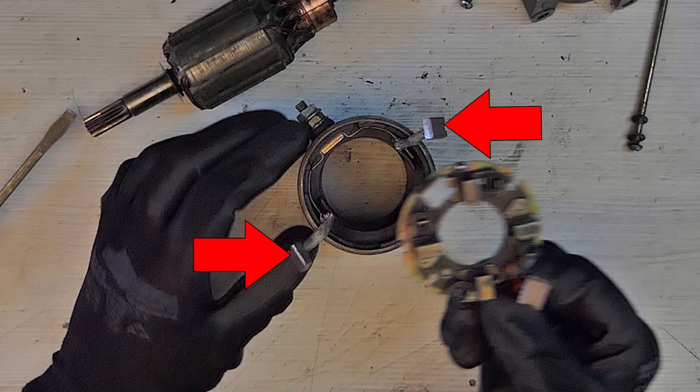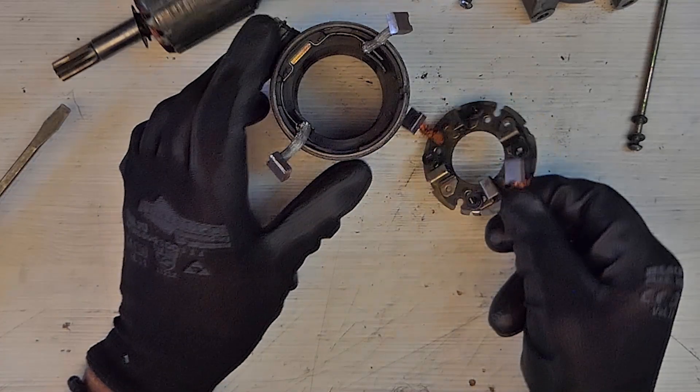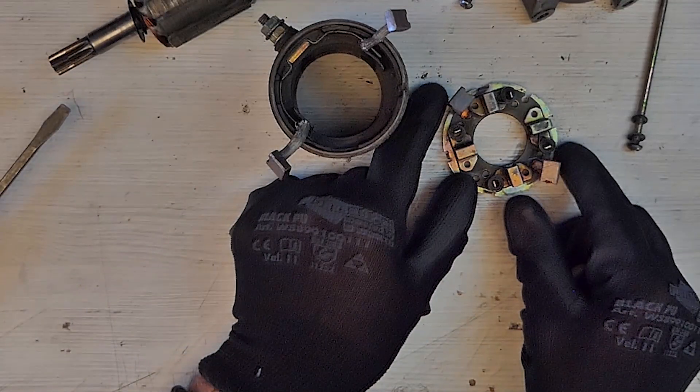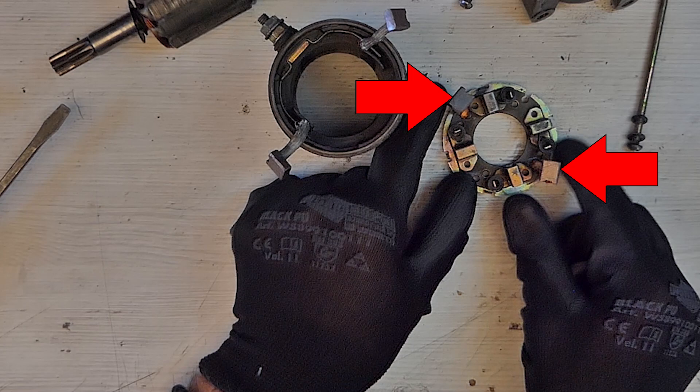In this case, the two brushes you see going into the stator are insulated from the housing and receive plus 12 volts through this screw. The other two brushes, which are connected to the brush holder, receive zero voltage, also known as ground or negative, directly from the housing.